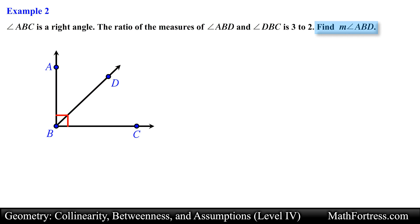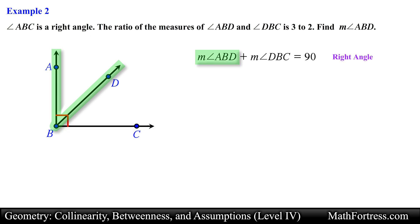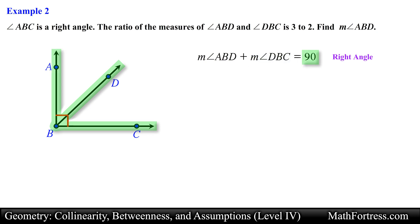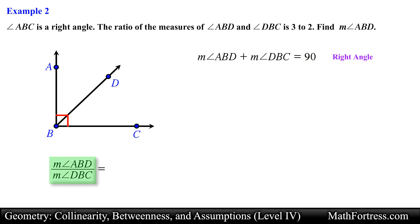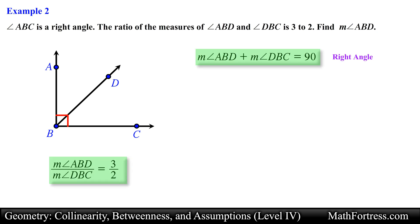In order to determine the measurement of angle ABD we need to figure out the combination of angles that would add up to 90 degrees and have a ratio of 3 to 2. In other words, the measurement of angle ABD plus the measurement of angle DBC should equal the measurement of angle ABC, which is a right angle, so the measurements should add to 90 degrees. Also, the ratio between the measurement of angle ABD and the measurement of angle DBC should equal 3 over 2. We can solve the problem by using algebra.